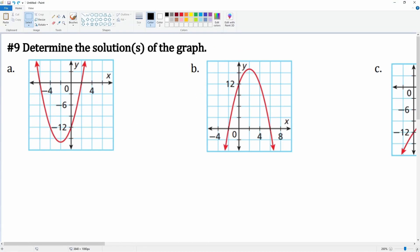Number nine asks for us to find the solutions of the graph. The solutions of this graph can be looked at by looking at the x-intercepts. The x-intercepts would get us the solutions.